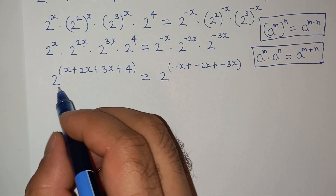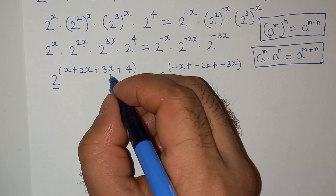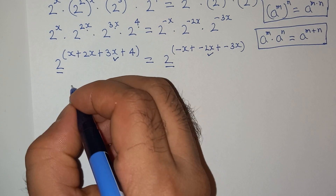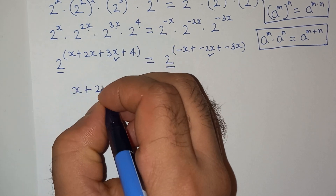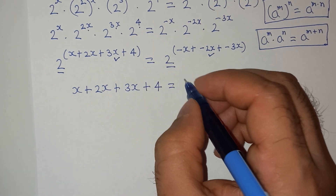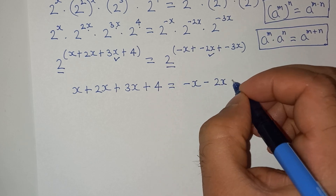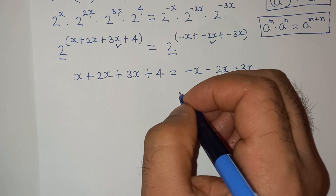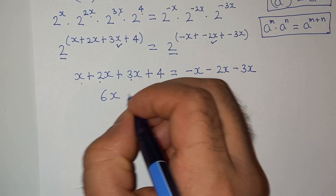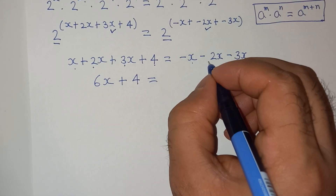Now as you can see, on the left hand side the base is 2 and on the right hand side the base is also 2. So we can equate the exponents. So we write x plus 2x plus 3x plus 4 equals to minus x minus 2x minus 3x. So x plus 2x plus 3x is 6x, giving us 6x plus 4 equals to minus 6x.